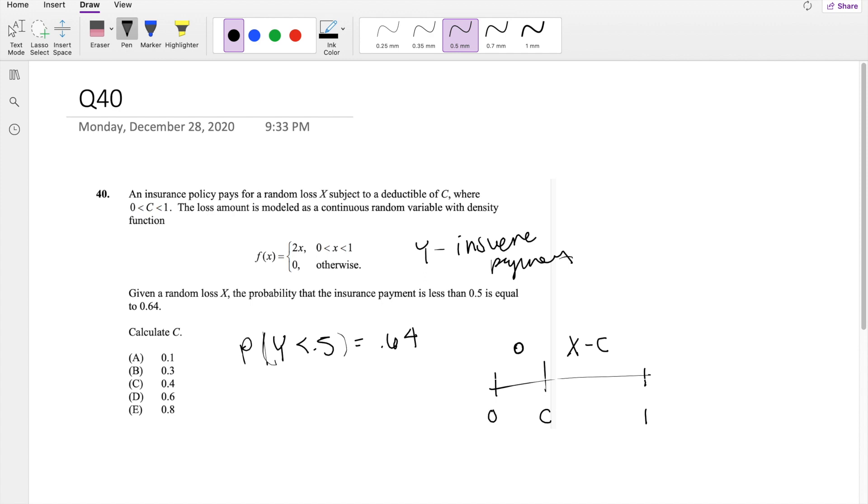So knowing that, we can just actually put this in terms of x. So then if this is equal to y, I'm gonna plug that in there, x minus C is less than 0.5. But then we can just bring C to the other side, so you get x is less than 0.5 plus C is equal to 0.64.